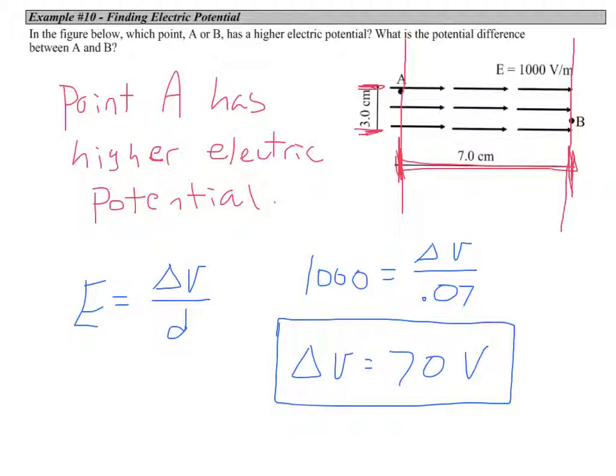That's a quick discussion on the connection between electric field and electric potential, both qualitatively and quantitatively. From here, in the next video, we're going to talk about the connection of electric field and electric potential in conductors. And then from there, we're going to move into talking about capacitors, which is all setting us up for being able to talk about circuits in the next unit. See you in class.